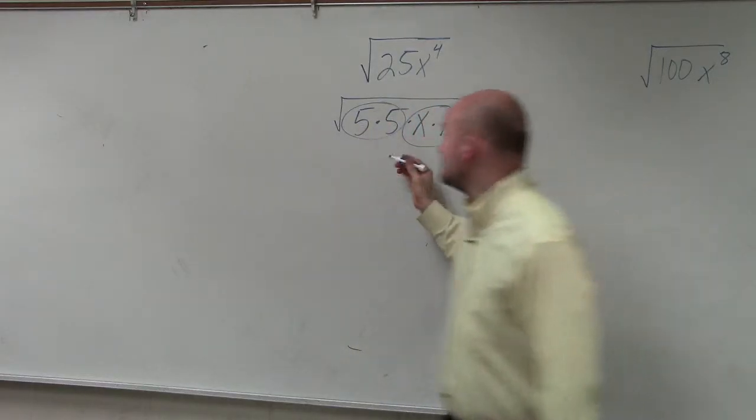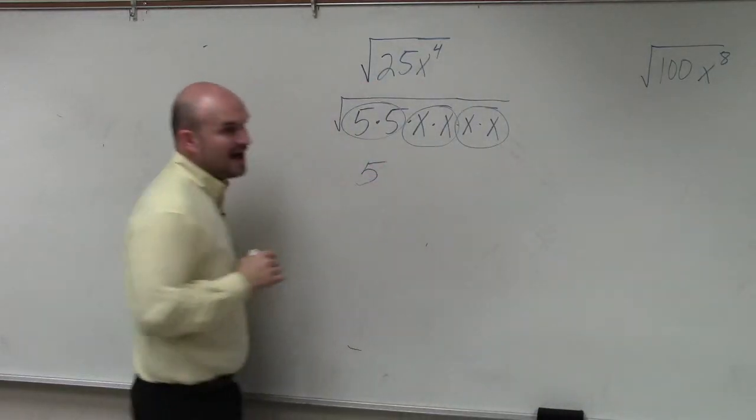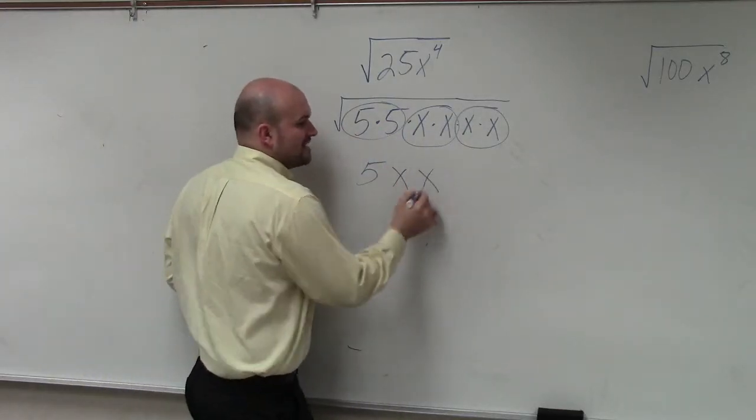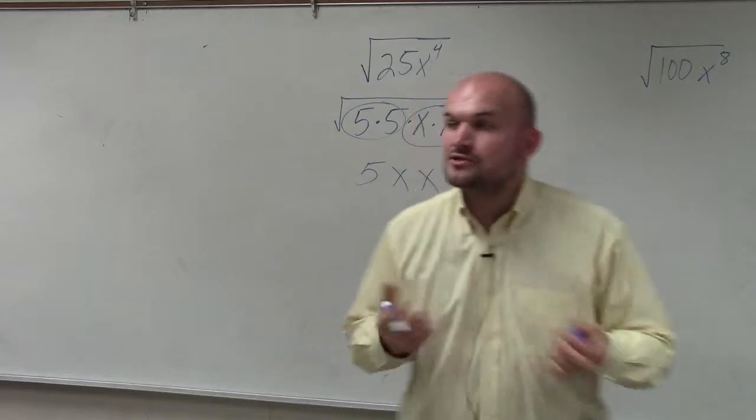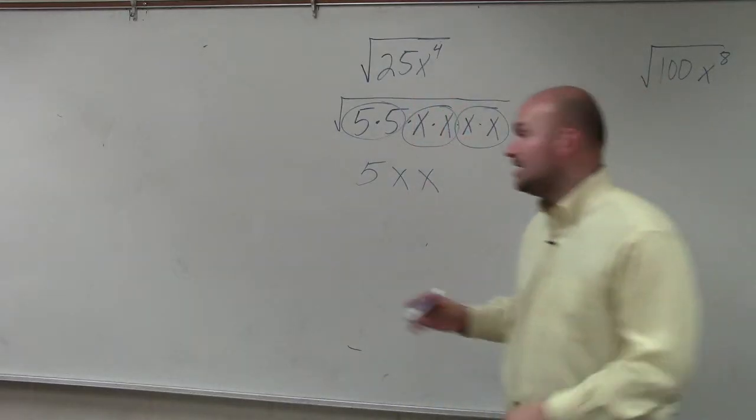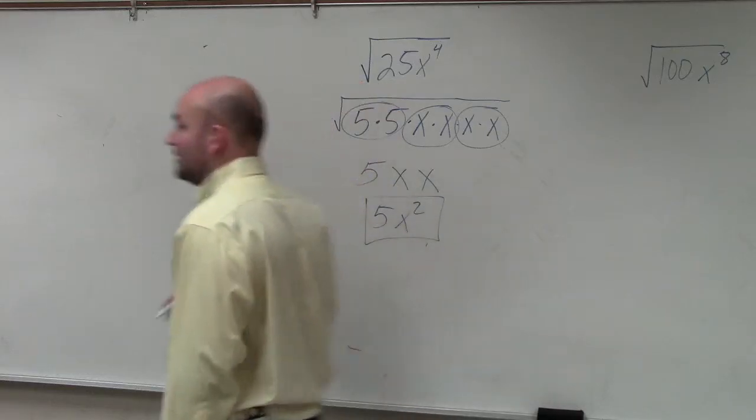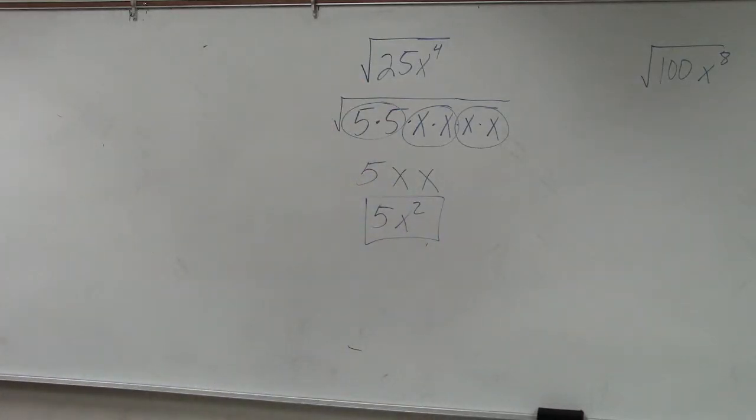So the square root of 5 times 5 is just 5. The square root of x times x is just x, and the square root of x times x is just x. So now I can simplify this to become 5x squared. And that is how you simplify your final answer. All right.